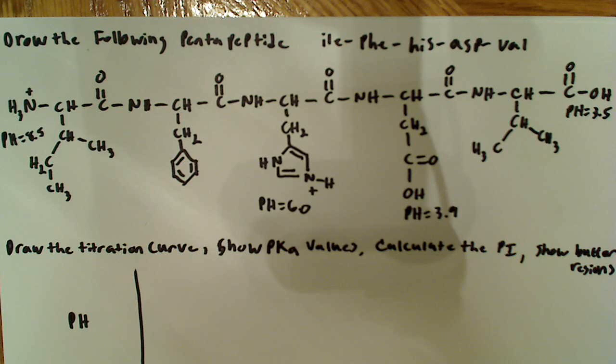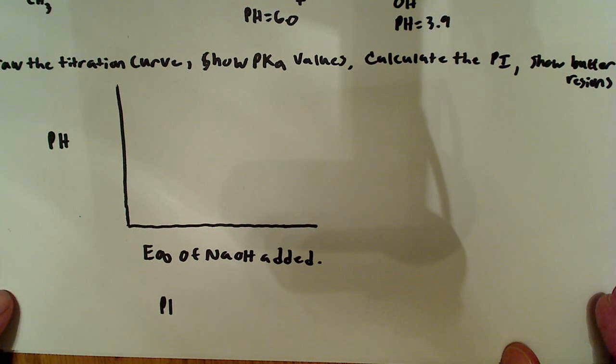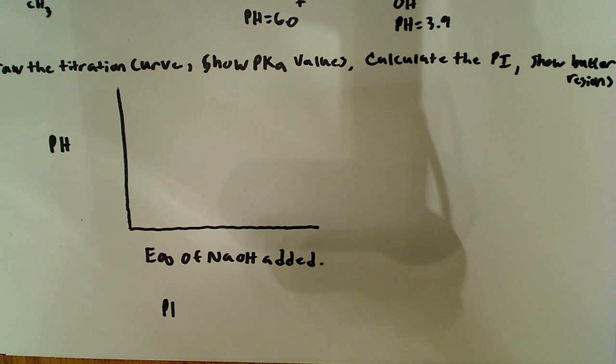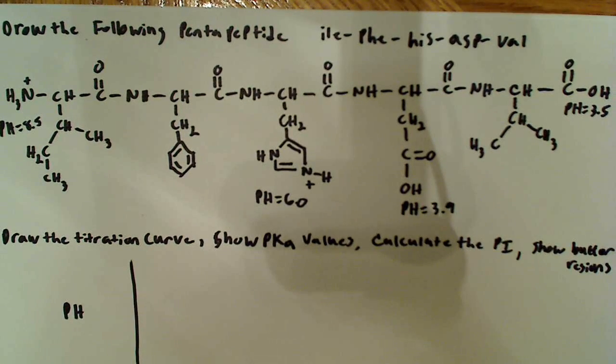That's important because that's exactly how we're going to set up the titration curve. So in order to draw a titration curve, basically what you want to do is you want to set up your axis, which will be equivalents of NaOH on the y-axis and pH on the x-axis. So now that we have that, the next thing to do that I like to do is I like to say, what is the charge on this pentapeptide when it's fully protonated?